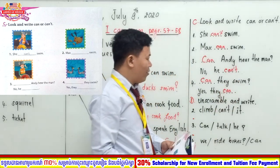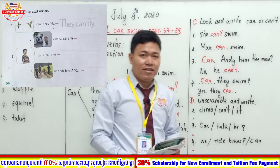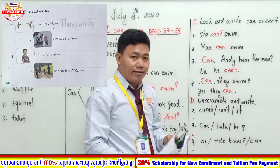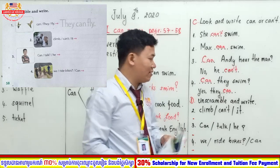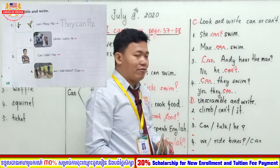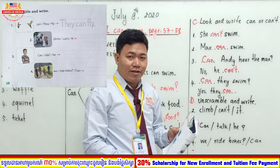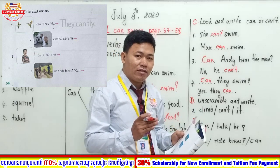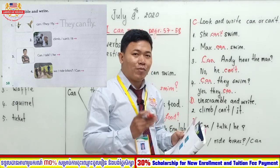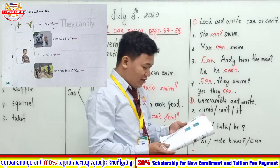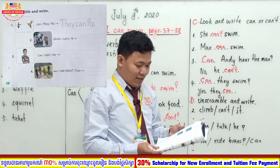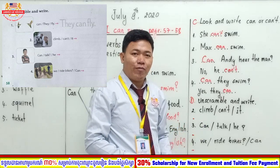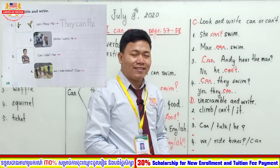We are done with Section C. Now we are coming to Section D. Read the instruction and learn how to do this exercise: 'Unscramble and write.' Look at the words — we need to unscramble them to create the proper sentence. Look at the picture and try to unscramble and write. I give you five minutes to do this exercise.